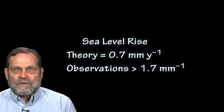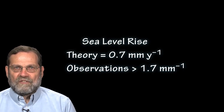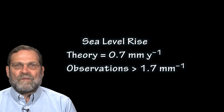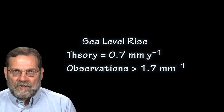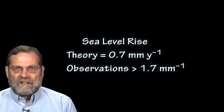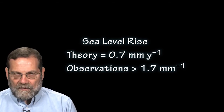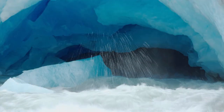So why do theory and practice differ? In this case, projected changes in the volume of ocean waters can account for a sea level rise of only 0.7 millimeters per year, while both tide gauges and satellites indicate the average rate is greater than 1.7 millimeters per year. Most likely, Antarctic and Greenland ice sheets are melting faster than previously estimated.